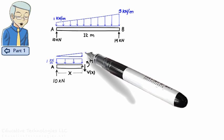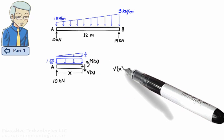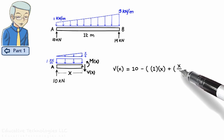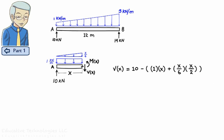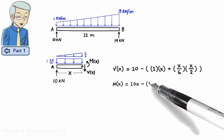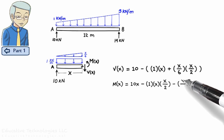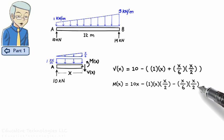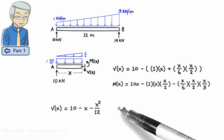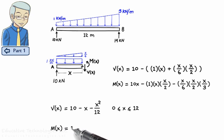The shear force can then be written as vx equals 10 minus 1 times x plus x over 6 times x over 2. mx equals 10x minus 1 times x times x over 2 minus x over 6 times x over 2 times x over 3. For simplicity, in summary, we have... Thank you.